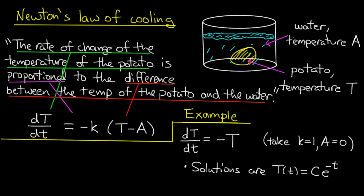Now, let's look at an example. Let's take k equals 1 and A equals 0. So that's like the physical situation having an ice bath. Now the solutions to this differential equation are pretty easy to guess. And those would be capital T of t equals C times e to the minus t.